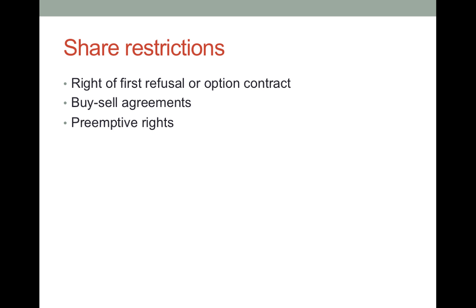A right of first refusal means you must first offer shares to someone who has that right before you can offer them to another purchaser. So, with the dry cleaning facility example, before you offer to sell those securities to your girlfriend, you must first offer them to the corporation or the existing shareholders — they have a right to buy before you offer them to someone else. An option contract functions similarly: if someone has an option, they have a right you must satisfy, but it doesn't create an obligation — they may choose to exercise that right, but they don't have to. These terms are very similar and sometimes interchangeable.